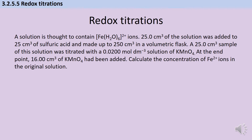There isn't actually a huge difference between the acid-base titrations you're familiar with and these redox titrations. The biggest difference is that instead of a pH indicator, we rely on the reaction being self-indicating. Also, if you're titrating to find the concentration of ethanedioate ions, you'll need to heat the solution to 60°C so the anions can interact.